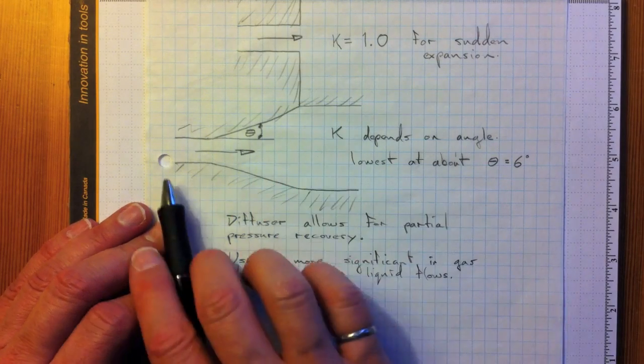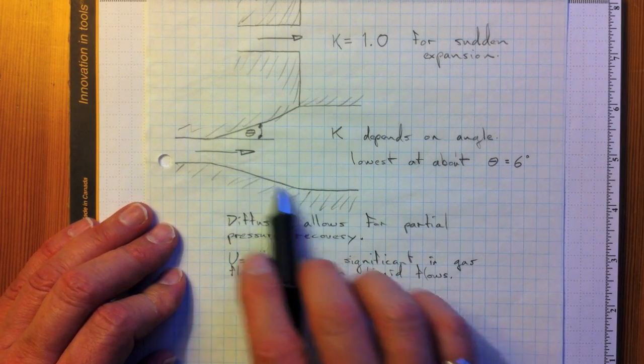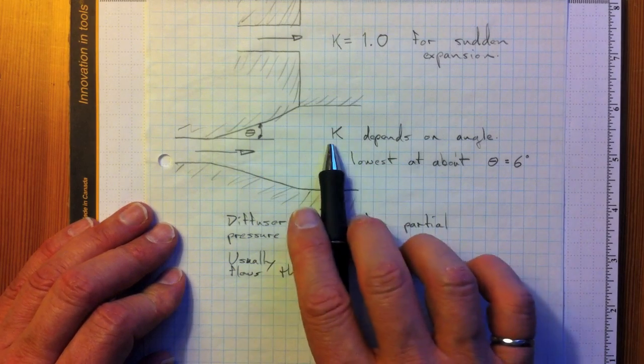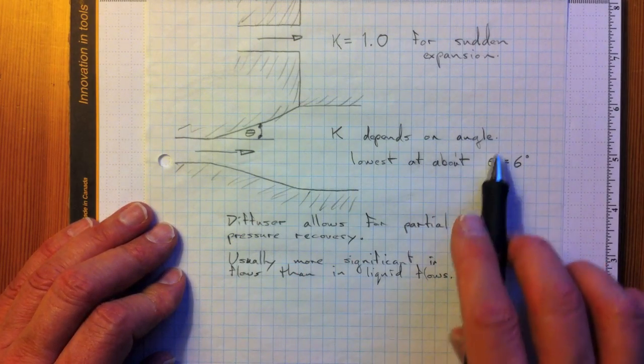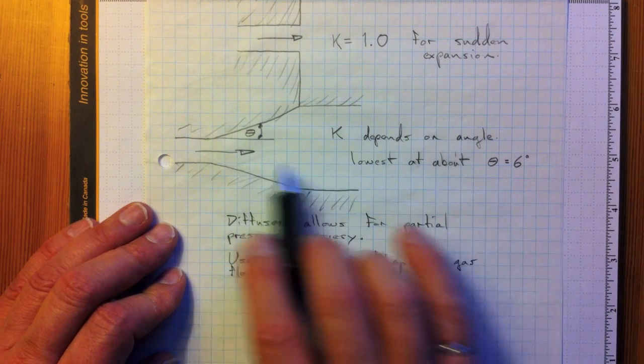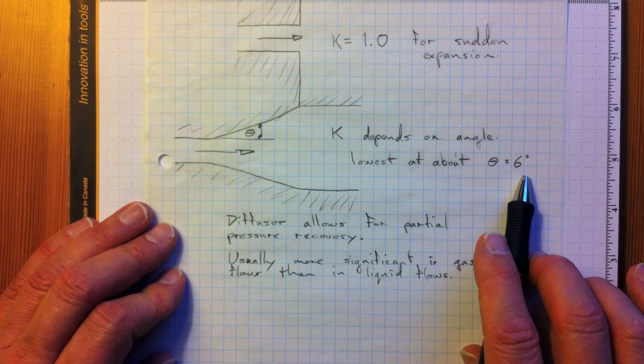That's this situation here where the flow is diffusing. The pipe is getting slowly larger and larger. And the k factor for this kind of a configuration depends on the angle. And it's lowest for an angle of about 6 degrees. So that's a very, very slow expansion there.